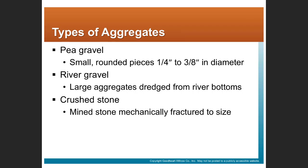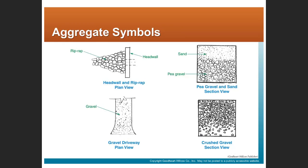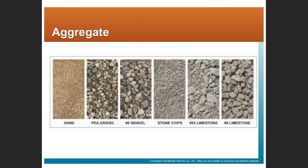We have different classifications of aggregates: pea gravel, river gravel or crushed stone. The drawings or specifications will call out those different types of aggregates. Different symbols on the drawings show the different types of aggregate that will be applied in certain situations.